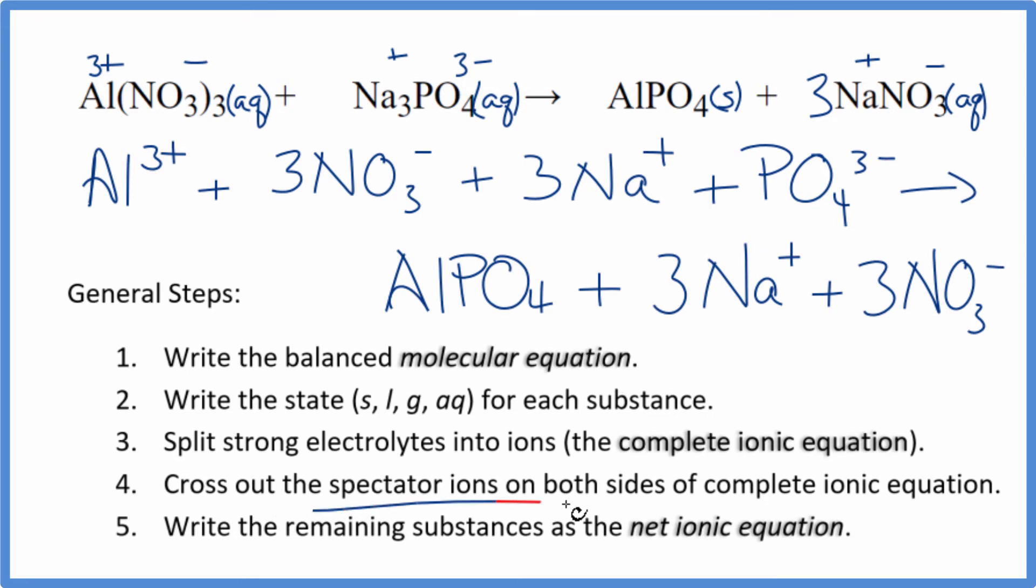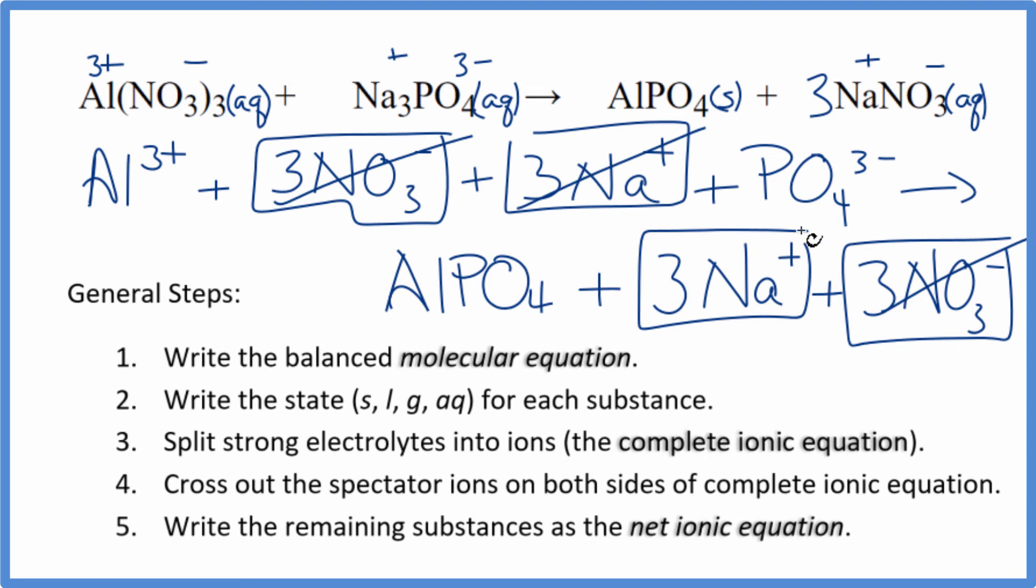Now we're going to cross out spectator ions. They're on both sides of the complete ionic equation. They haven't changed, so as chemists, we're not interested in them. Let's see, reactants, we have three nitrate ions right here. Products, three nitrate ions. These are spectator ions, we'll cross those out. In the reactants, we have three sodium ions. Same in the products here, spectator ions. Cross them out. What's left, that's the net ionic equation for aluminum nitrate plus sodium phosphate.